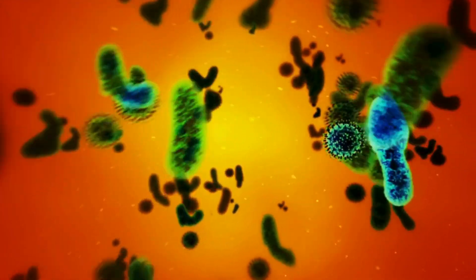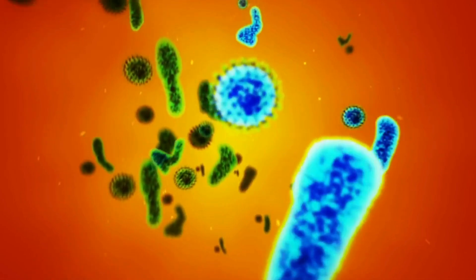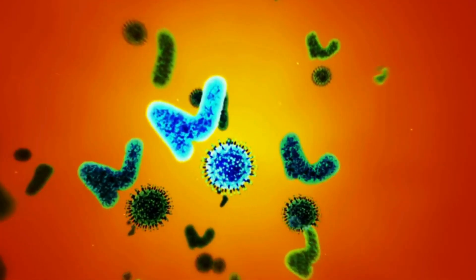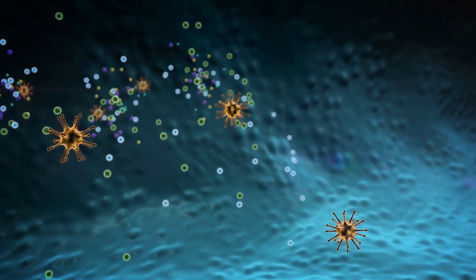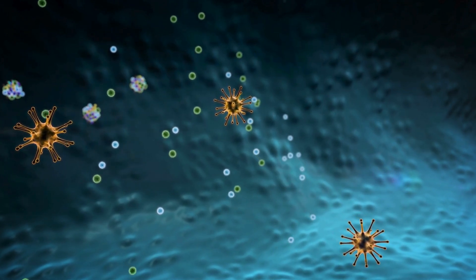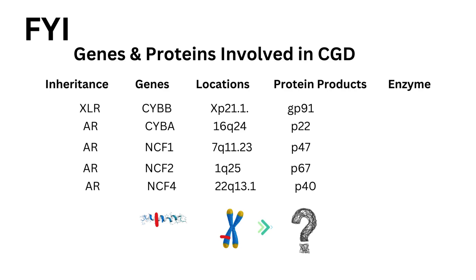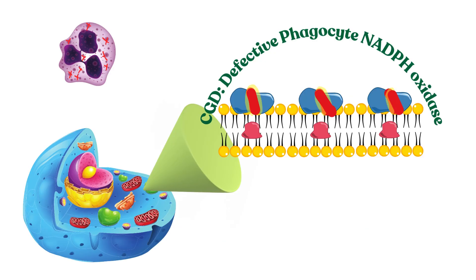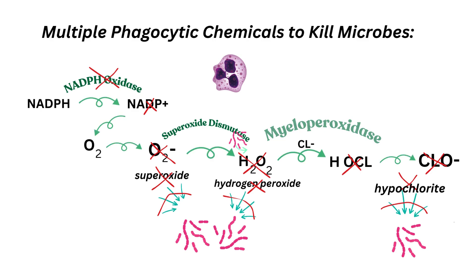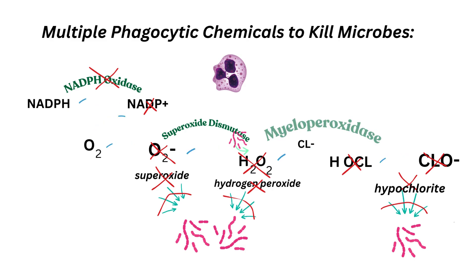The microbe is killed and its remnants are released into the extracellular space by exocytosis. In CGD, there will be defective protein products and defective NADPH oxidase enzyme. If you predicted there would be less superoxide, hydrogen peroxide, and hypochlorite to kill the microbes — especially those that are catalase-positive — then you are right.